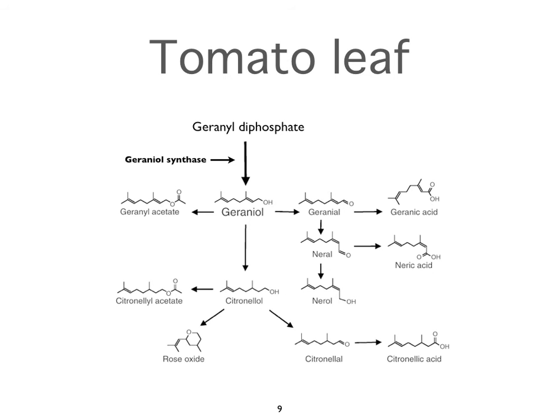It also helps to explain why isomers are often found together, because one is created from the other. Alpha-pinene and beta-pinene — you always find them together. You never find one without the other; one may predominate, but they're always together. Similarly, alpha-thujone and beta-thujone — you always find them together.